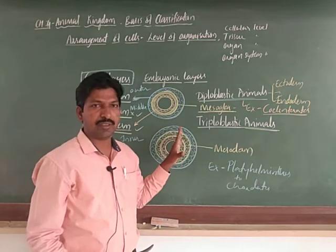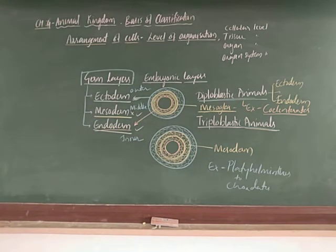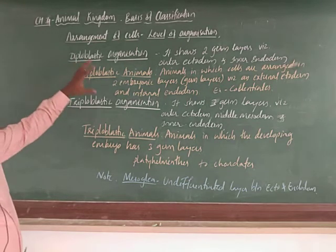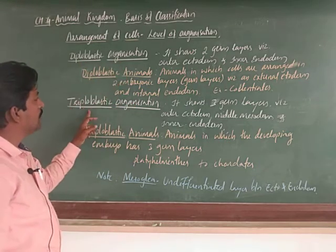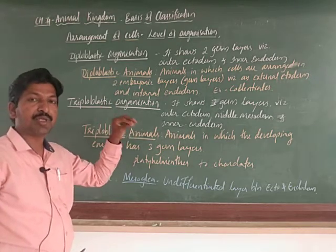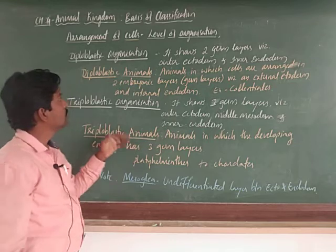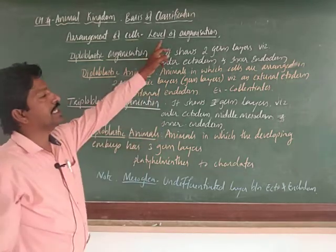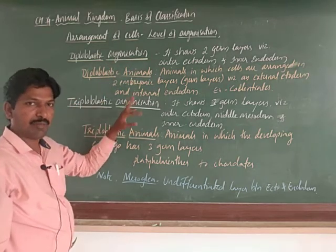With examples written, you should swipe and note the points. Before going to the next topic, review and note the points. Diploblastic organization and triploblastic organization are based on the arrangement of cells in the embryonic stage. The animals showing this embryonic organization are referred to as diploblastic organization or triploblastic organization.